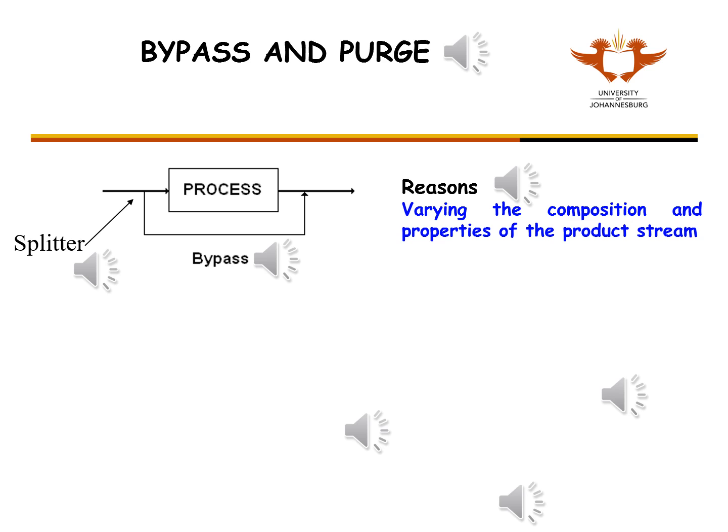Note that the feed stream to the plant, the feed stream to the process, and the bypass stream all have the same composition. In other words, the streams leaving the splitter have the same component concentrations as the stream feeding the splitter.